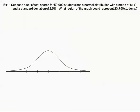Let's look at example one. Suppose a set of test scores for 50,000 students has a normal distribution — and it's important to note in the problem that we're talking about a normal distribution, which allows us to use our empirical rule — with a mean of 81% and a standard deviation of 2.5%. What region of the graph could represent 23,750 students?